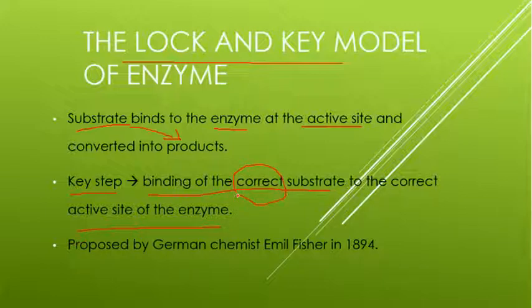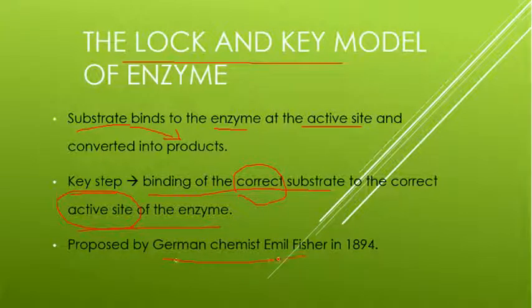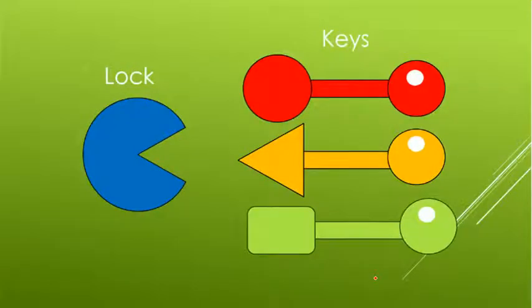It means that the correct substrate should bind with the correct active site. To explain the mechanism of how this substrate is going to bind with the enzyme, German chemist Emil Fischer proposed the Lock and Key model in 1894.